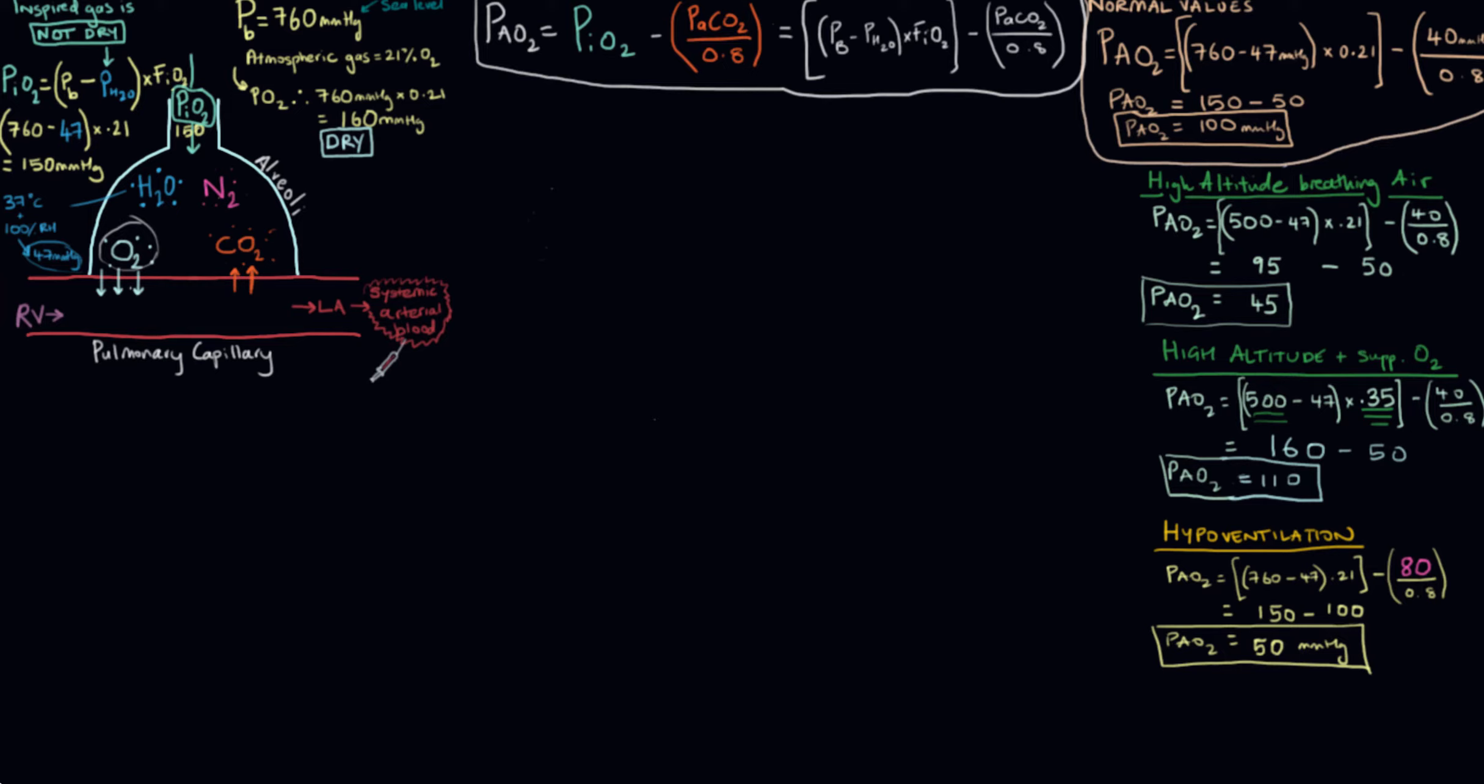Let's look at a couple of examples of the alveolar air equation in action. This first one that I've written down here is somebody breathing regular air, so no enriched oxygen concentration, just normal air, at a high altitude, and what effect that has on their PO2.